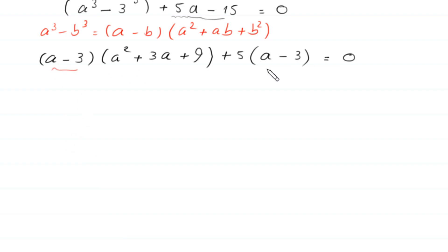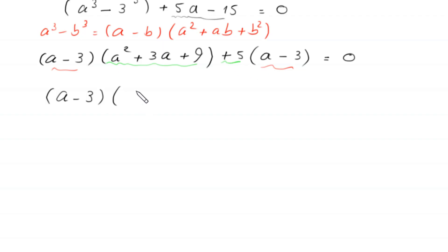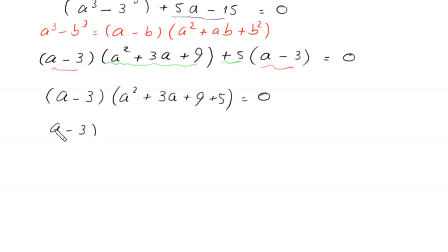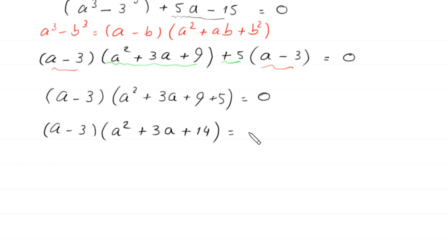The expression a minus 3 is a common factor. So we factor out a minus 3, leaving in the bracket a squared plus 3a plus 9 plus 5. This 9 plus 5 becomes 14, giving us a minus 3 times a squared plus 3a plus 14 is equal to 0.